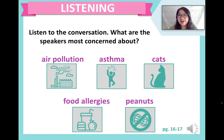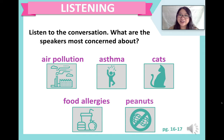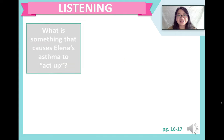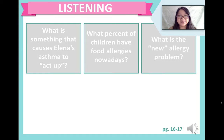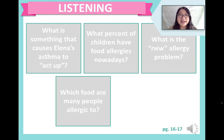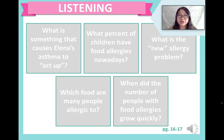You might have noticed they talk about all of those topics, but the most important one was food allergies — more specifically, peanut allergies, which can be especially dangerous. Now let's listen to the file one more time, but this time listen for details. In the textbook we have a few questions to answer. Number one: what causes Elena's asthma to act up? Number two: what percent of children have food allergies nowadays? Number three: what is the new allergy problem? Number four: which food are many people allergic to? And number five: when did the number of people with food allergies grow quickly? Please listen and answer the questions.